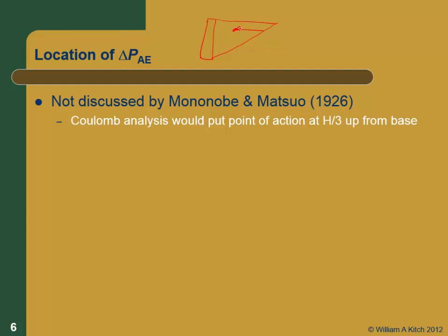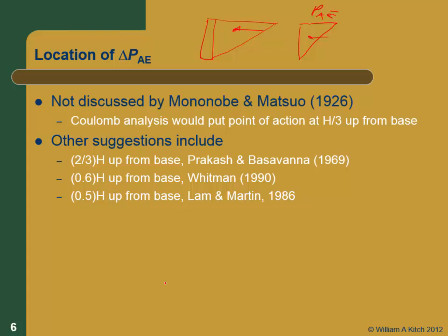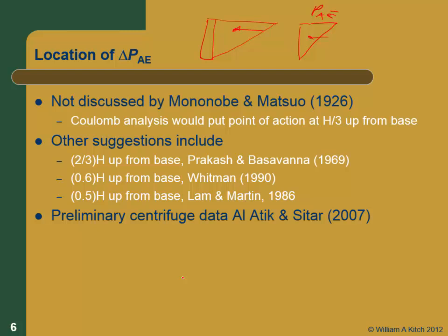A Coulomb analysis would put it one-third up from the base. There are other suggestions: two-thirds of the base — that's the one people use a lot. One paper said the distribution of PAE is an inverted triangle, just the opposite of the static earth pressure — that was made in 1969. Whitman said it should be 0.6 up from the base in 1990. Lamm and Martin said halfway up the base in 1986. None of that comes from any measured data.